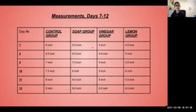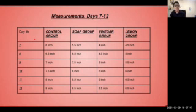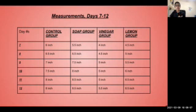Some of the most important days of the experiment were days 7, 8, 9, and 10. These days were very important because, as you can see, on day seven the control group was six inches tall and the soap group was 5.5 inches tall, which is normal. For all the days after, the soap group underwent a period of rapid growth, and by the end of this period it was a half an inch taller than the control group.